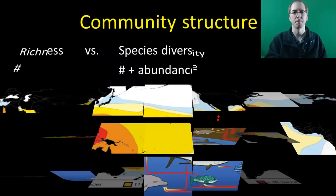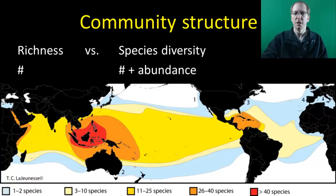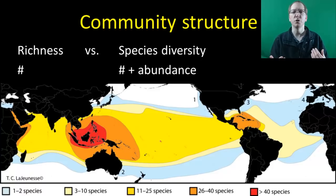With community structure, there are two basic ways we try to look at it. The first is species richness, which is the more simplistic way — we just count how many species are present. As you can see on the chart, around the tropics you typically see an increase in species richness. You'll also see that if there's a lot of rainfall or moisture, that tends to bump up species richness a little bit.